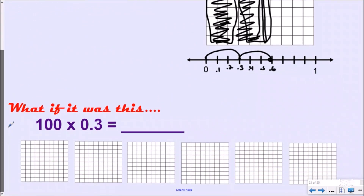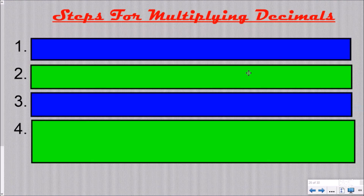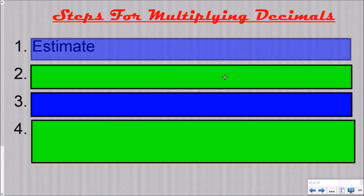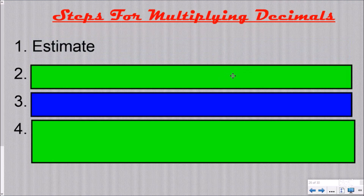That's pretty easy when it's two or three groups, but if you have a hundred groups you really don't want to be shading in a hundred groups of three-tenths — I couldn't even fit enough area models on the page. So if you want to do something like that, it's important you understand how to do it using the standard algorithm. Step one: you want to estimate first. Anytime you're multiplying decimals, estimating will help you put your decimal back in the right place later.